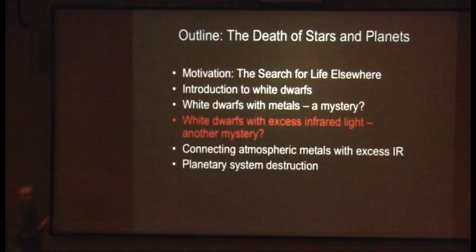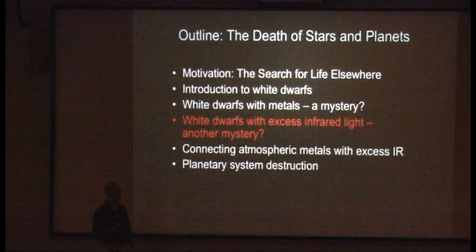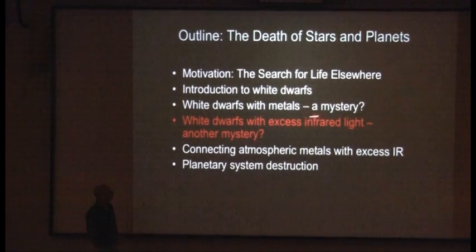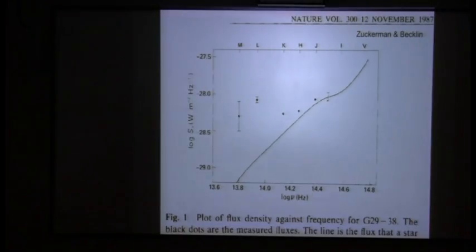Okay, let's hold that story, let's hold that problem in our head. That's what a white dwarf is. Some of them have metals in their atmosphere. It's a bizarre thing. Let me tell you about white dwarfs with excess infrared light, and maybe that's another mystery. It wasn't a mystery for very long, but let me start with this.